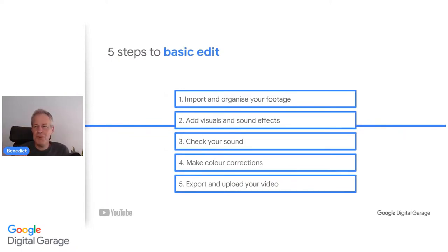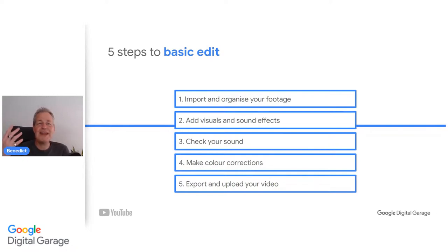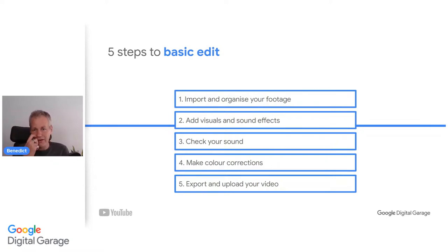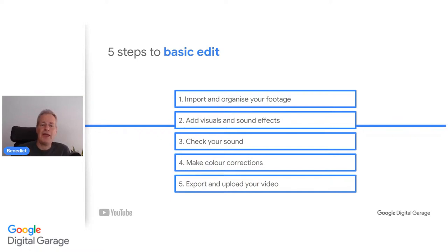Five steps to basic edit. First, import and organize the footage — keep versions labeled clearly to help you. Add visuals and sound effects — you can have almost unlimited options to add titles, intros, and transitions, but don't go too far and make it all too much. Check your sound — it's so important to check your audio right from the beginning, because if it's bad audio, you've lost them. Make color corrections as well, depending on the project — you can do some color correction to fix brightness and match colors across all your shots. And then export and upload your video. To understand these steps further, head over to YouTube Creator Academy and check it out for a beginner's guide to video editing.